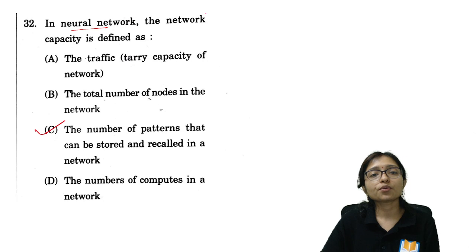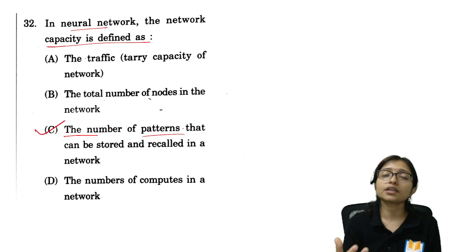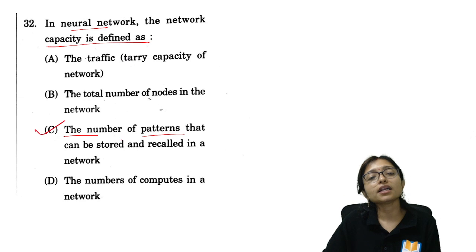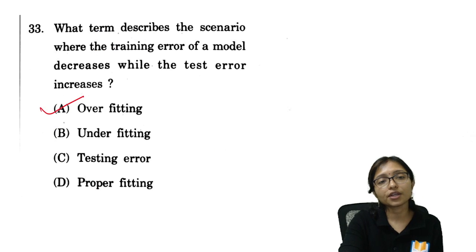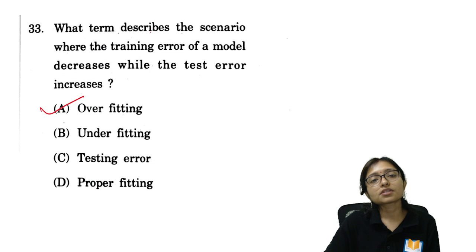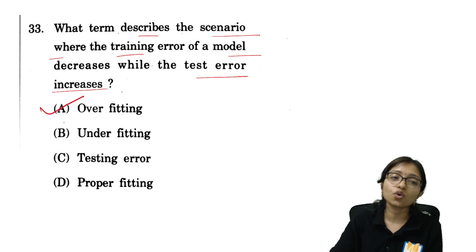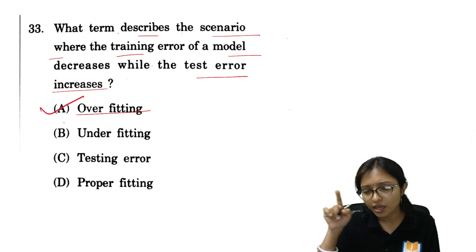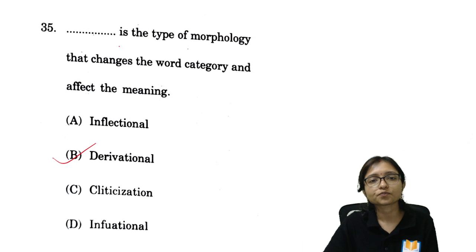Next: network capacity in a neural network is defined as the number of patterns that can be stored and recalled in the network, since neural networks work on patterns. Next: the scenario where training error decreases while test error increases is called overfitting. This overfitting question has appeared in previous years and we have also covered it in our MCQ course.